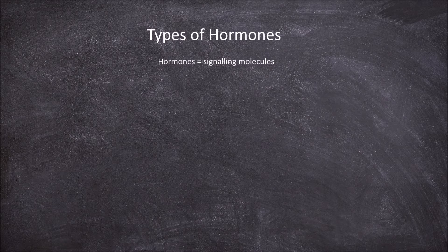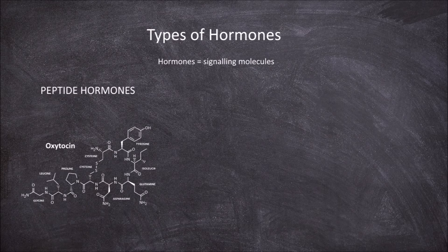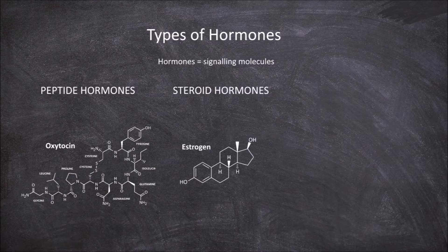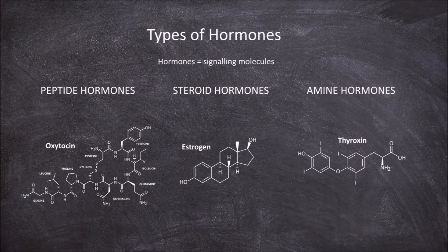There are three groupings of hormones based on their structure: peptide hormones, steroid hormones, and amine hormones. The structure of the hormones — which is the chemical composition of the hormones — affects how the hormone functions.